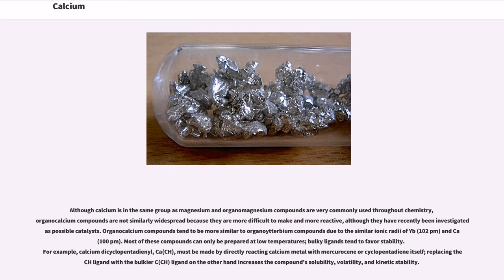Although calcium is in the same group as magnesium and organomagnesium compounds are very commonly used throughout chemistry, organocalcium compounds are not similarly widespread because they are more difficult to make and more reactive, although they have recently been investigated as possible catalysts. Organocalcium compounds tend to be more similar to organoytterbium compounds due to the similar ionic radii of Yb²⁺ (102 pm) and Ca²⁺ (100 pm). Most of these compounds can only be prepared at low temperatures. Bulky ligands tend to favor stability.